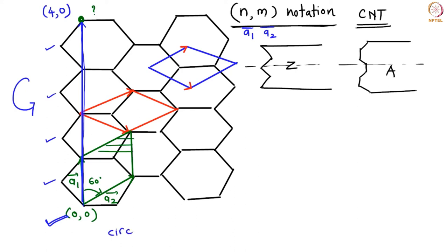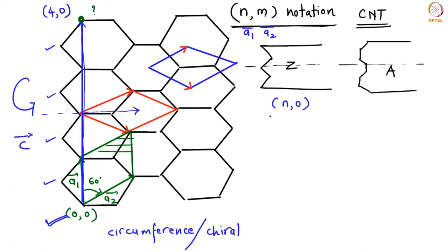When four-zero and zero-zero overlap, this entire vector becomes the periphery or circumference of your tube. This vector is often called the circumferential or chiral vector, denoted by C. When we talk about carbon nanotubes we will discuss what is chiral and achiral; there is also the axis vector, which is the axis of your carbon nanotube when rolling up the graphene sheet. When you have zigzag-type carbon nanotubes, the coordinates are going to be n,0 type — so if someone gives you a '10,0' nanotube, you already know that is a zigzag type.